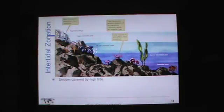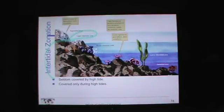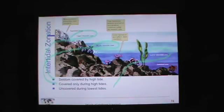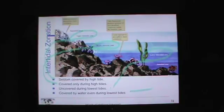A little bit on intertidal zonation: the upper intertidal zone is very seldom covered by high tide. Covered only during high tides is the middle intertidal zone. Uncovered during the lowest tides is the lower intertidal zone — those zones are seen at least once a day in most oceans. Covered even in the lowest tides is the sub-tidal zone.